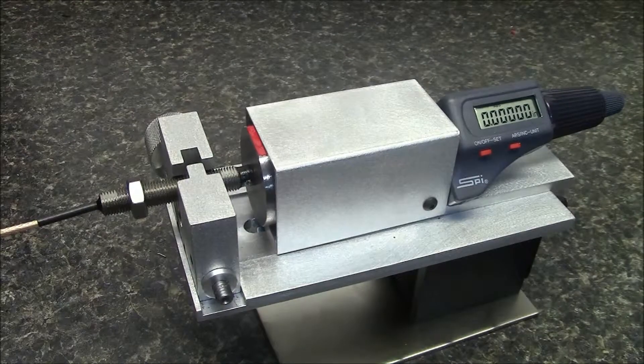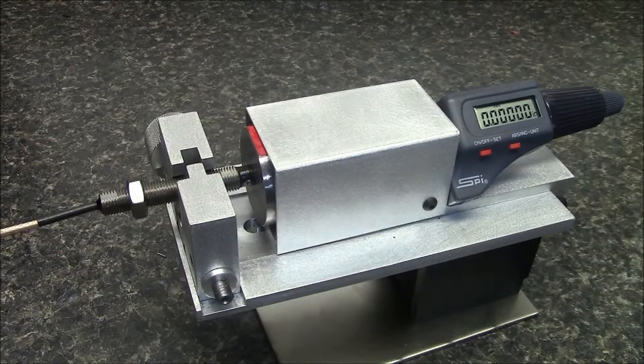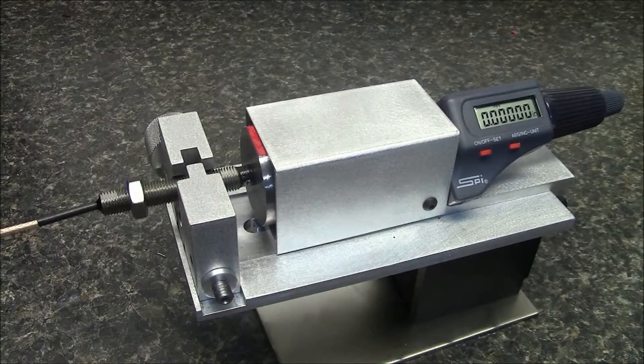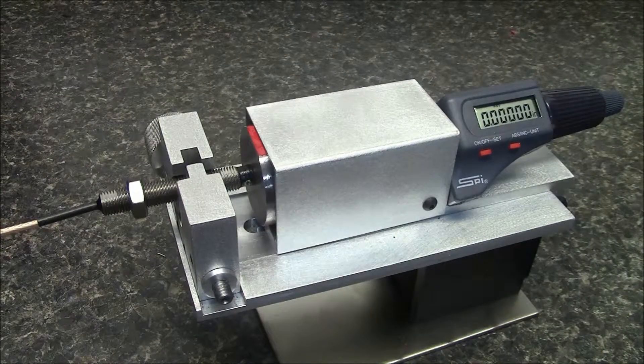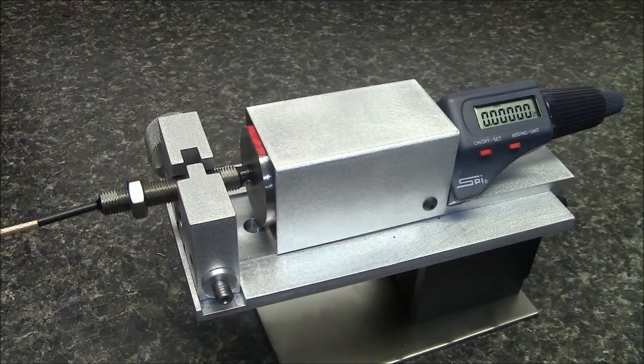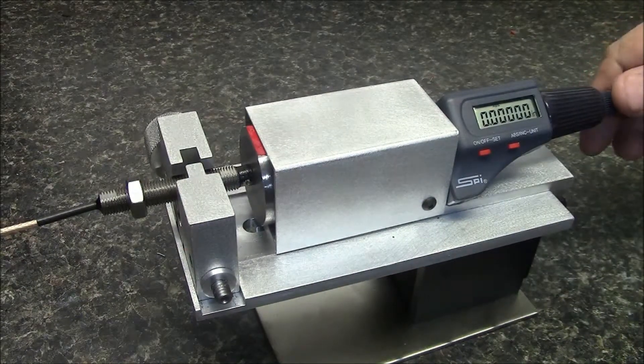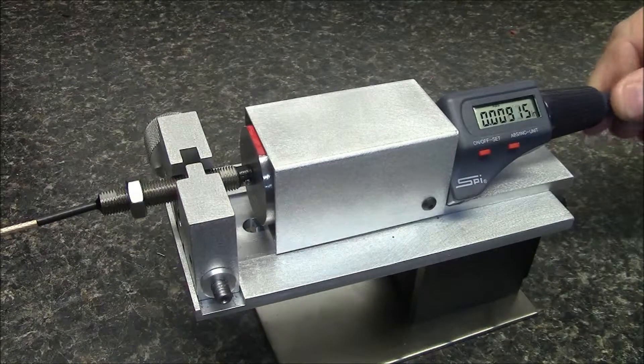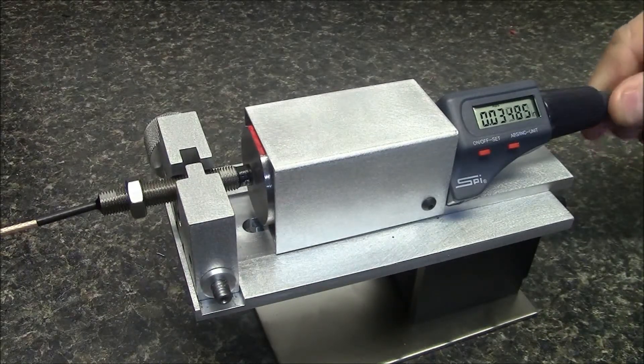Electrical run-out is caused by internal variations in the alloy mix of the target material and they only affect the probe reading if that alloy variation changes due to the rotation of the target material. Therefore, we eliminate the possibility of electrical run-out by using a non-rotating target material.